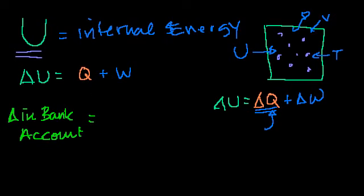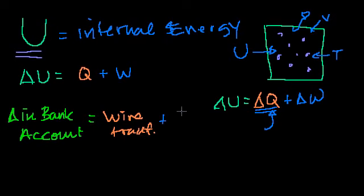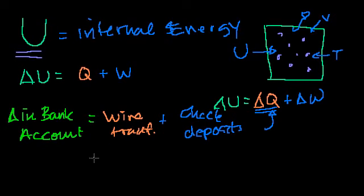Heat is one kind — maybe heat is like a wire transfer to your account, and work is like check deposits. It makes a lot of sense to say: what is the value of my bank account, or what is my change in bank account — you take two snapshots at two different times.